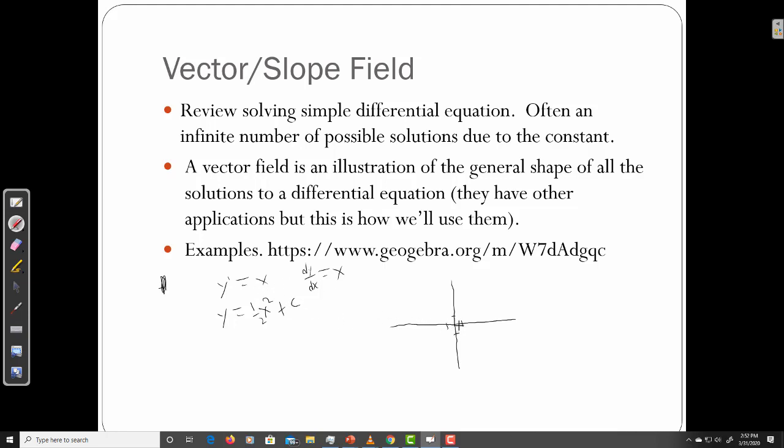So y prime is x. So at x equal one, y prime is one. Now that's the slope. So what you would do is you would draw a little line segment with an arrow that has a slope of about one. And everything at x equal one would have a slope like that. Man, I'm not drawing this well, but you know, we'll look at a good one here in a second. That's why I have a link there, which I will put in the description of the video if you want something to click. But in any case, everything along x equal one would have a slope of one.